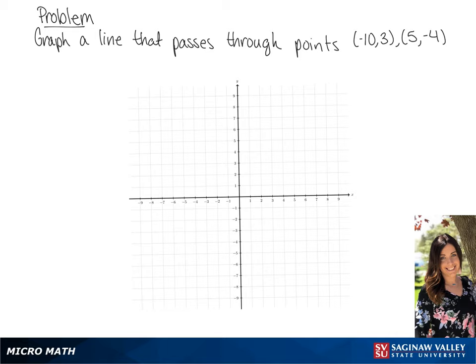The first point we're going to graph is negative 10, 3, so we're going to go left 10 and up 3. Now to graph 5, negative 4, we're going to go right 5 and down 4. And now we're going to draw a line that passes through both of these points.